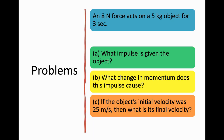Moving on to our problems — these will start out easy and get progressively harder. The scenario: an 8-newton force acts on a 5 kg object for 3 seconds. We have three problems from this scenario. Problem A: what impulse is given to the object? Problem B: what change in momentum does this impulse cause? Problem C: if the object's initial velocity was 25 meters per second, then what is its final velocity?